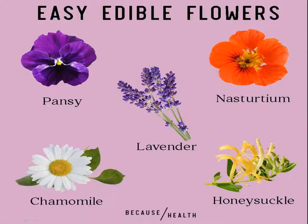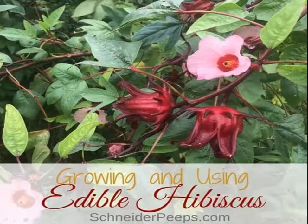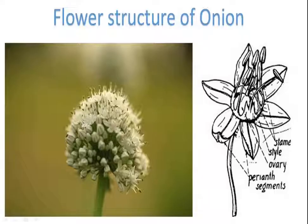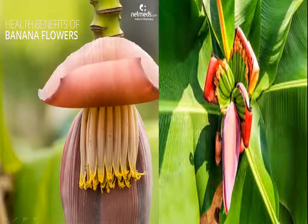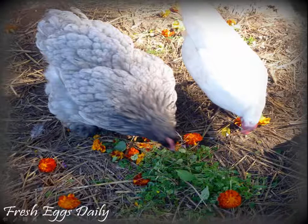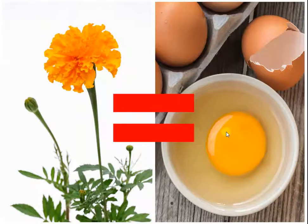Some of the common edible flowers are hibiscus, marigold, lavender, onion flower, banana flower, and others. Children, do you know marigold flowers are fed to chickens so that they produce eggs with a golden yellow colored yolk, which are preferred by consumers?